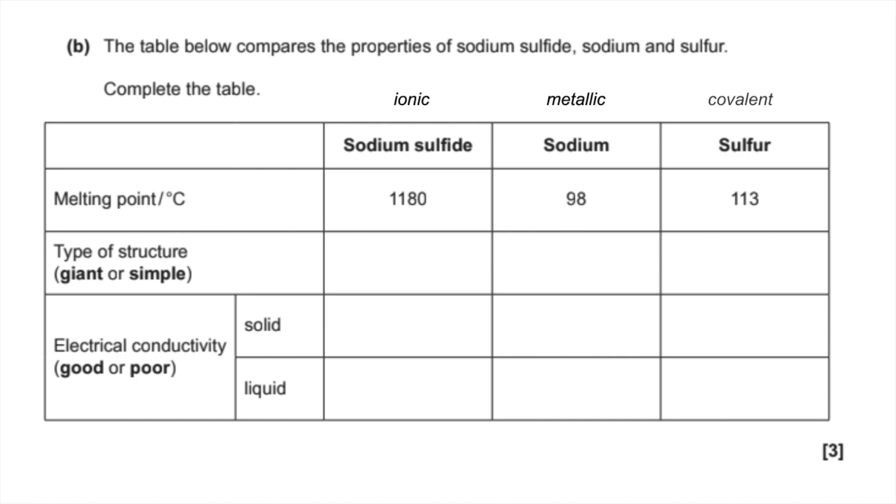So in terms of type of structure, we've only got two options, giant or simple. Well, all ionic compounds have a giant ionic lattice structure. So giant is obviously the answer there. Metals also all form giant metallic lattices. And covalent is the only tricky one because it could be simple or giant. Sulfur is a simple covalent molecule. So it's just things like boron and carbon and silicon that would need the giant structure there.